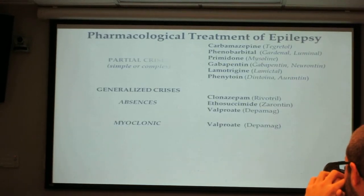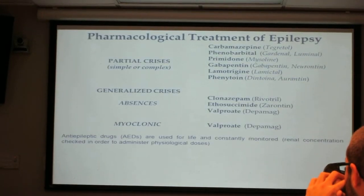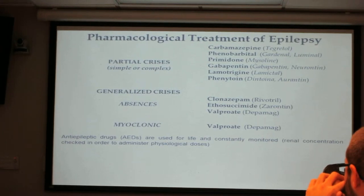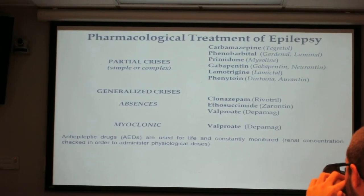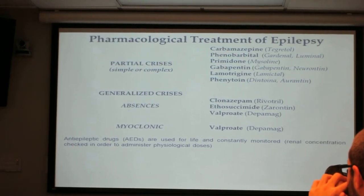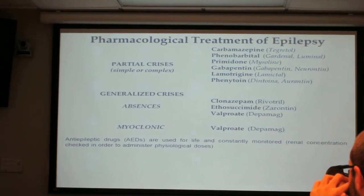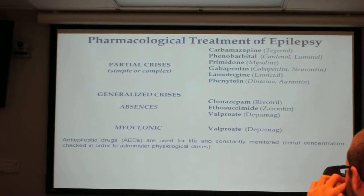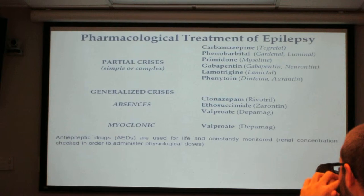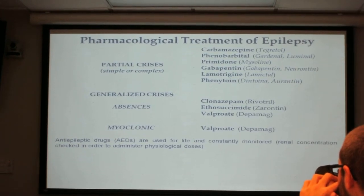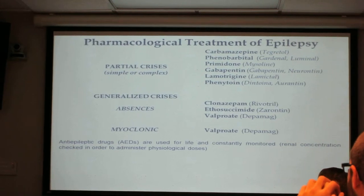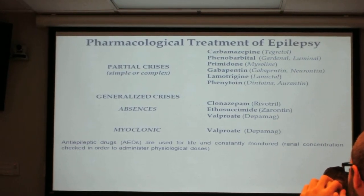The pharmacological classic treatment for epilepsy involves a large spectrum of molecules. The most known is probably carbamazepine for partial crises. We also have phenobarbital, lamotrigine, and phenytoin — all very well-known pharmaceuticals. For generalized crises we have clonazepam and valproate, which is also used for myoclonic seizures.